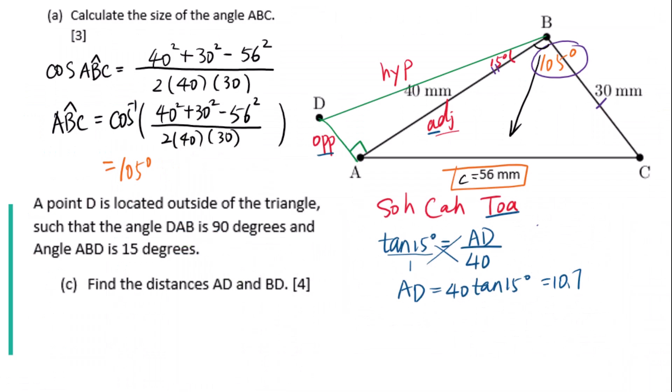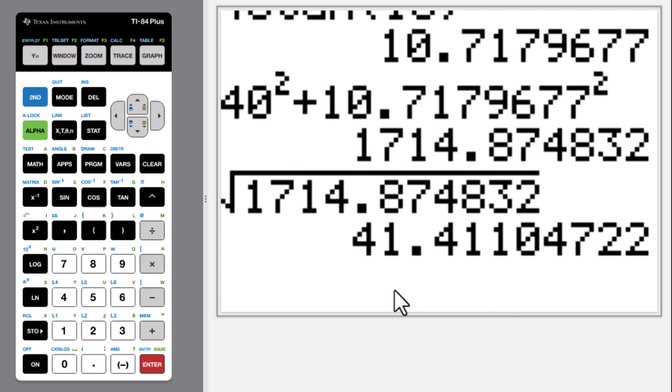Since this is a right triangle, BD as hypotenuse equals 10.7 square plus 40 square then square root. Answer is 41.4.